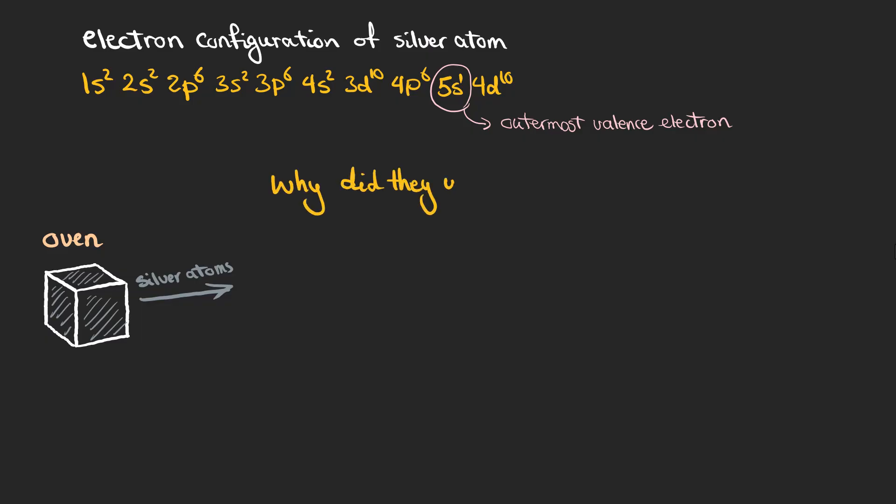Let's talk more about why they used silver. Silver can be vaporized in a straightforward way and was a good option which was accessible. Silver atoms in the gas phase exist as monatomic particles meaning they do not form diatomic molecules like oxygen O2 or nitrogen N2 or other compounds. This ensures that the beam consists of individual silver atoms which is necessary for studying their magnetic properties.